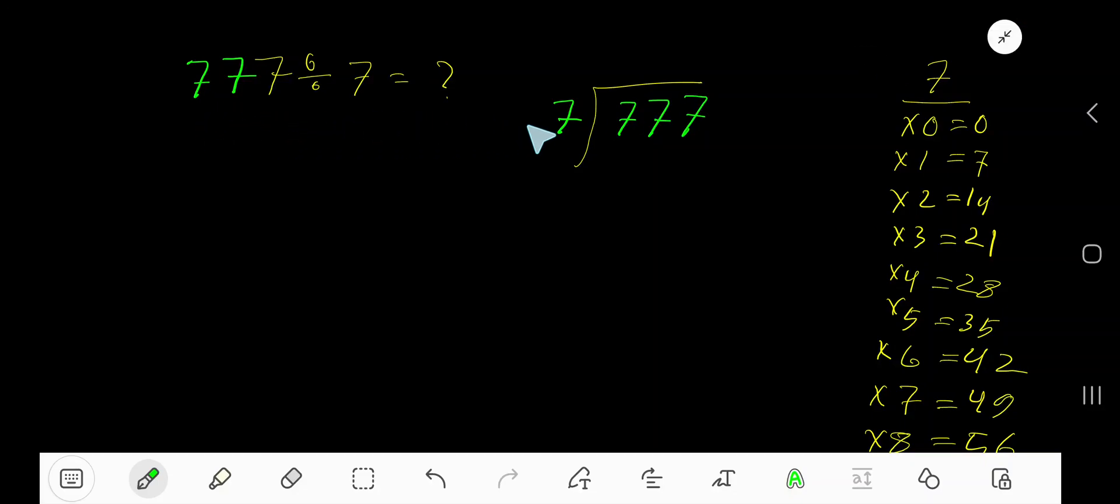777 divided by 7. Here, 7 is the divisor. The multiplication table of 7: 7 times 0 is 0, 7 times 1 is 7, 7 times 2 is 14. To find the multiplication table of 7 easily, just add 7 to the previous step: 0 plus 7 is 7, 7 plus 7 is 14, 14 plus 7 is 21, 21 plus 7 is 28.